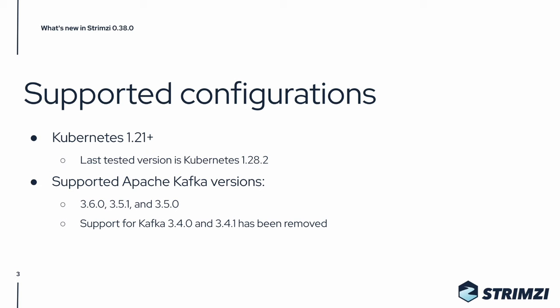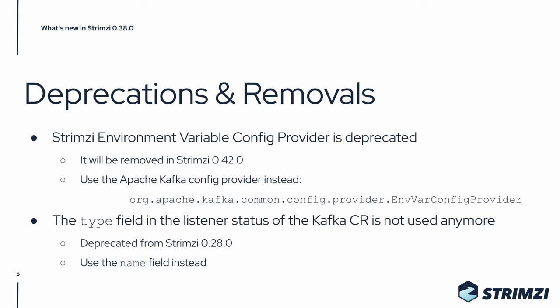Before we jump to the main new features, let's talk for a while about deprecations and removals. We decided to deprecate the Strimzi environment variable config provider. The reason is that Apache Kafka now has its own environment variable config provider which works in the same way, so it doesn't make sense to maintain both of them. Please switch to use the Apache Kafka config provider. The Strimzi provider will still be there until Strimzi 0.42 when it will be removed.